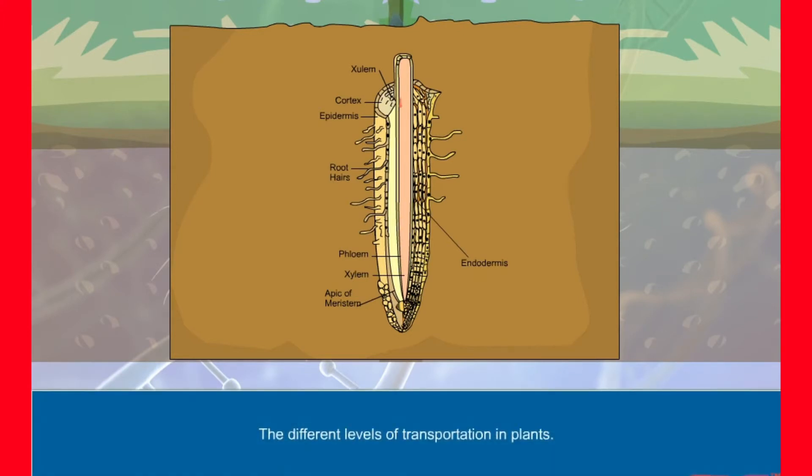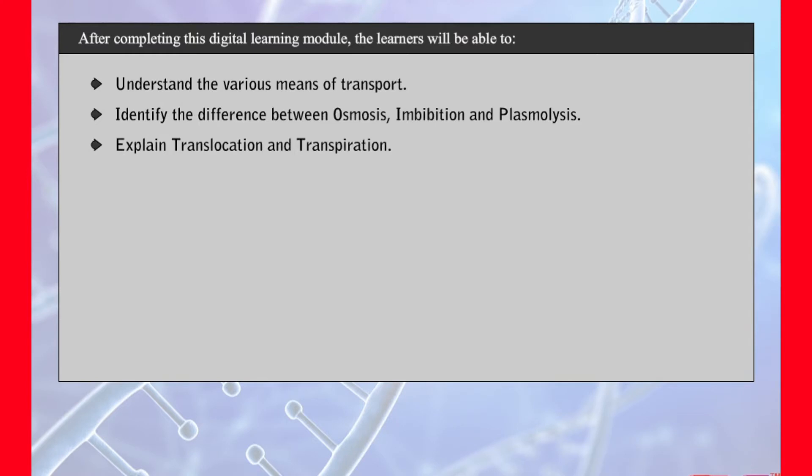In this module, we will study the different levels of transportation in plants. After completing this digital learning module, the learners will be able to understand the various means of transport, identify the difference between osmosis, imbibition and plasmolysis, explain translocation and transpiration, and understand the mechanism of phloem transport.